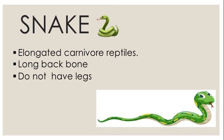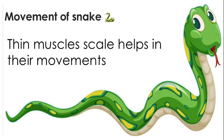Snakes never move in a straight line — they always move in a wavy structure. This is because they do not have a vertebral column that would allow straight-line movement. They slither in a wavy structure, and with the help of their thin muscle scales and muscles throughout the body, they can crawl very fast.